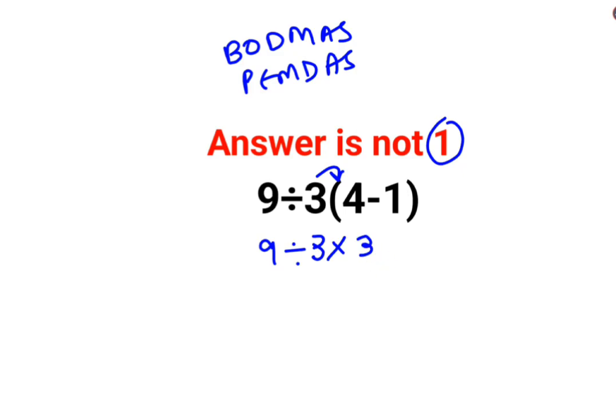Now at this point, a lot of people think this is 9 divided by 3 multiplied by 3, which is 9, so the answer is 1.